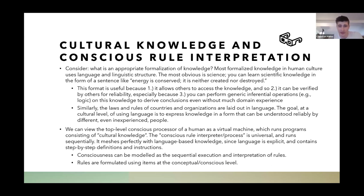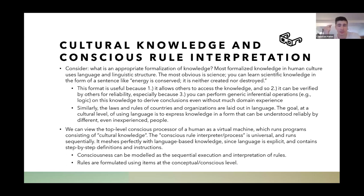Similarly, the laws and rules of countries and organizations are laid out in language. The goal at the cultural level is to express knowledge in a form that can be understood universally by different and inexperienced people. We can view the top-level conscious processor as a virtual machine running programs of cultural knowledge. This conscious rule interpreter is universal and runs sequentially — it fits perfectly with language-based knowledge because language is explicit and contains step-by-step definitions. Consciousness can be modeled as the sequential execution of rules formulated at the conceptual level.